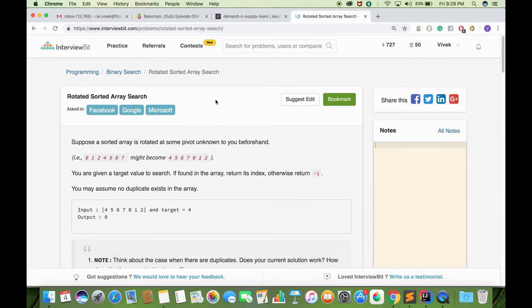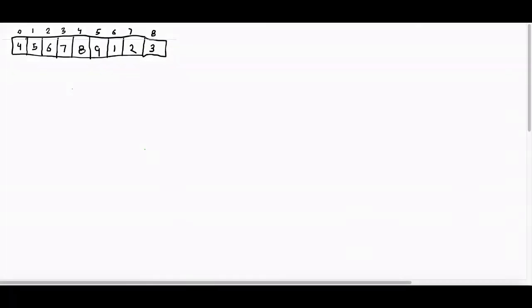Let's see how we can solve this by taking an example. Let the given array be [4, 5, 6, 7, 8, 9, 1, 2, 3]. You can see that this array is sorted and rotated three times to the right, and here the pivot is 1. Our target value to search is let's say 6.